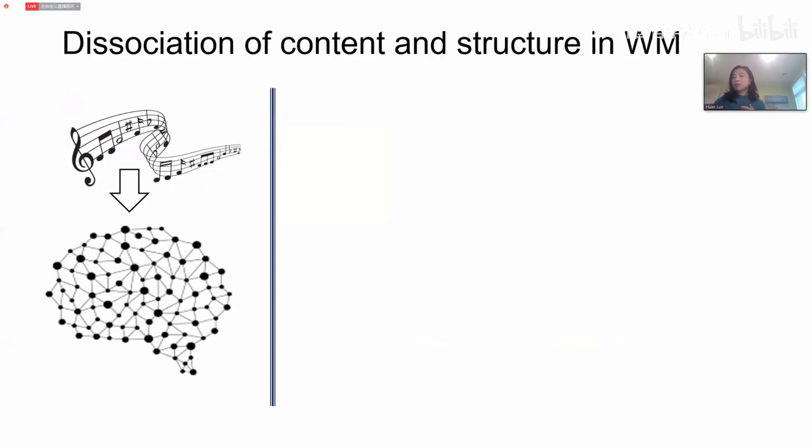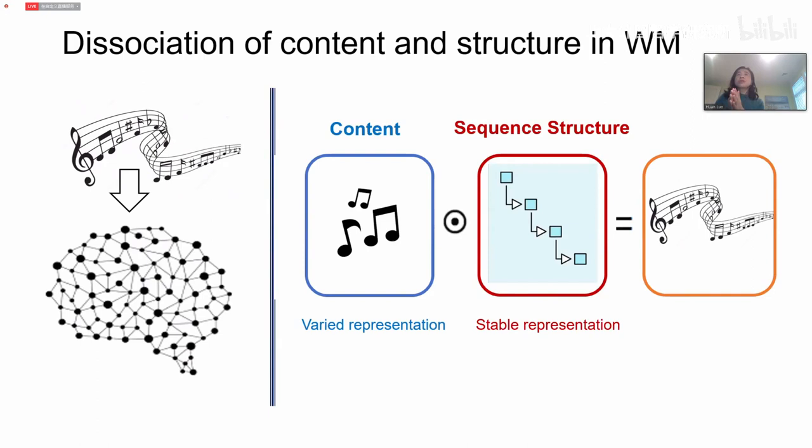To summarize this part: how do you memorize an auditory sequence or a music melody? Your brain tries to segregate content and structure together — you know the pitch and then the ordinal position within the sequence structure. You dissociate them and maintain them in working memory. That is the take-home message for the first part.